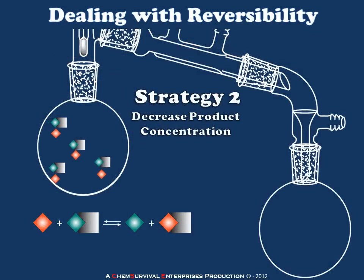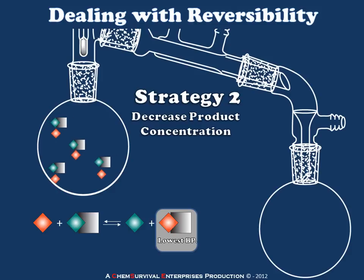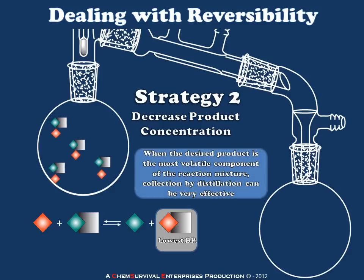Now that we've established it's possible to use a disfavored equilibrium in synthesis, let's look at a specific example. Given our generic reaction, let's assume our product of interest has the lowest boiling point — it's the most volatile component of the equilibrium mixture. This is a fortunate situation because we know how to remove the most volatile component of a chemical mixture: distillation. So I've charged the boiling flask of a simple still with the reagents for our synthesis, and as the reaction runs, the new product preferentially vaporizes and accumulates in the receiving flask. When the desired product is the most volatile component, distillation is an excellent way to exploit Le Chatelier's principle and maximize conversion.